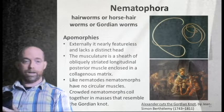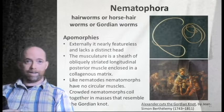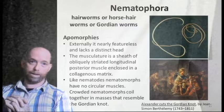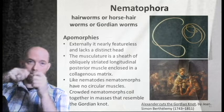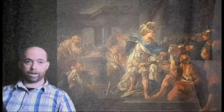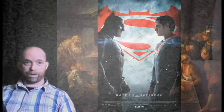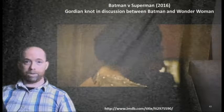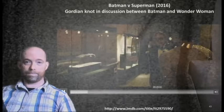Crowded together, nematomorphs look like the legendary Gordian knot. The name refers to the tale of Alexander the Great, who was presented with the challenge of undoing a complicated knot to prove his greatness. Rather than fiddling with it, he simply cut it with his sword — a bit like Indiana Jones pulling out a gun in a whip fight. This reference even appeared in Batman vs. Superman.